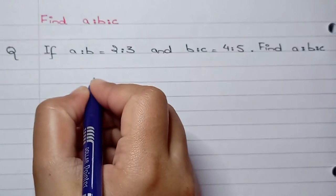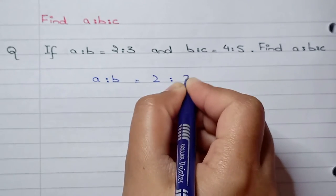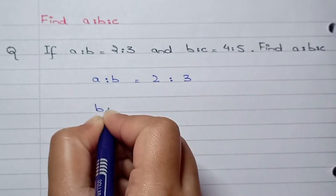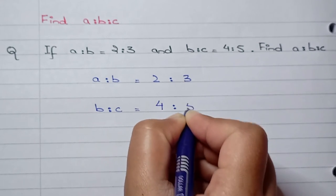Okay, so first we need to write down A ratio B is equals to 2 ratio 3 and B ratio C is equals to 4 ratio 5.